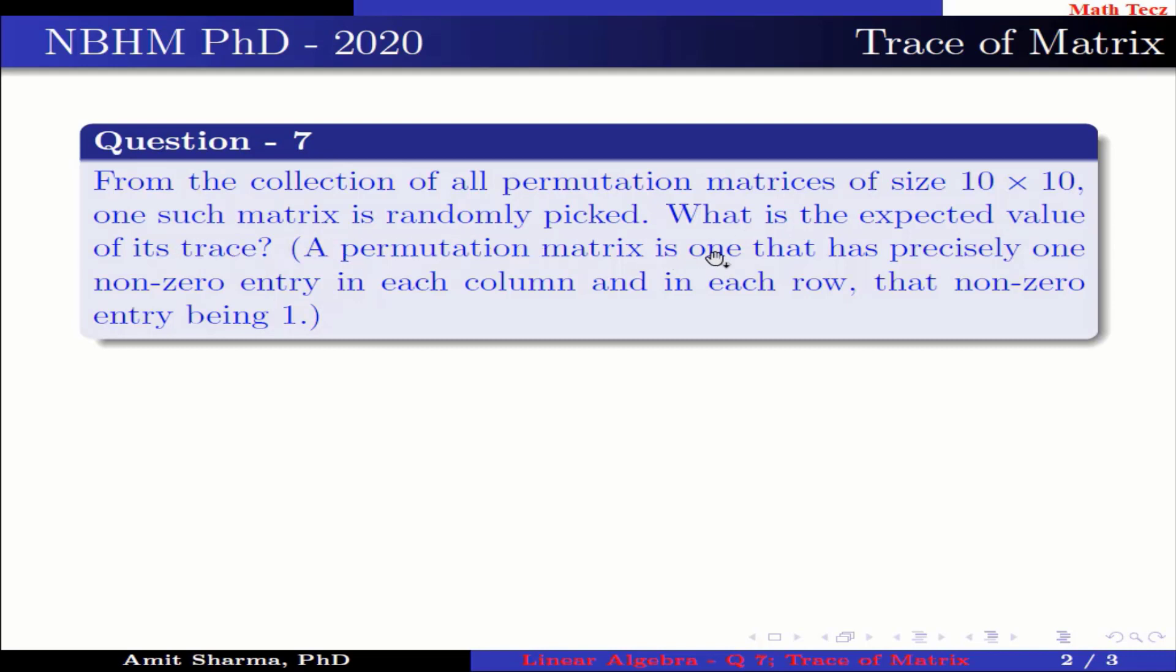A permutation matrix is one that has precisely one non-zero entry in each column and in each row, that non-zero entry being 1.